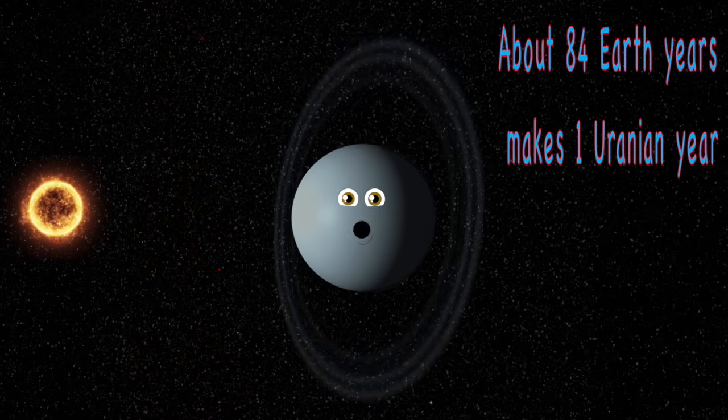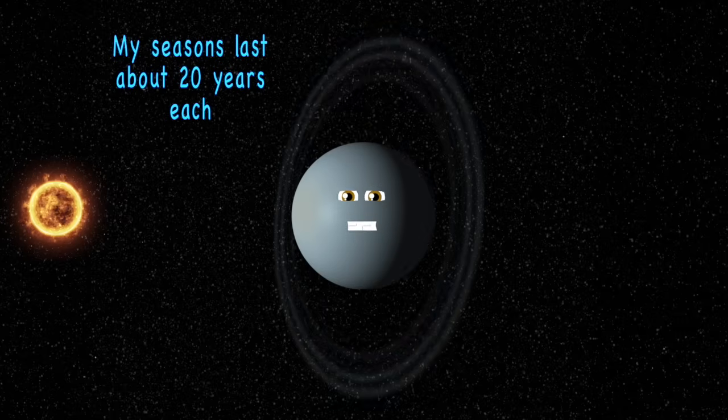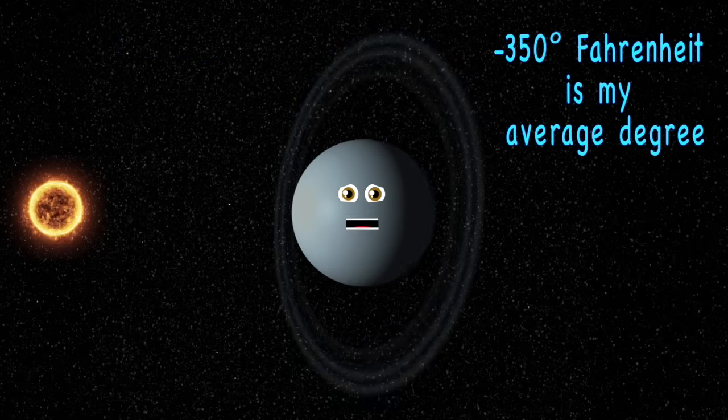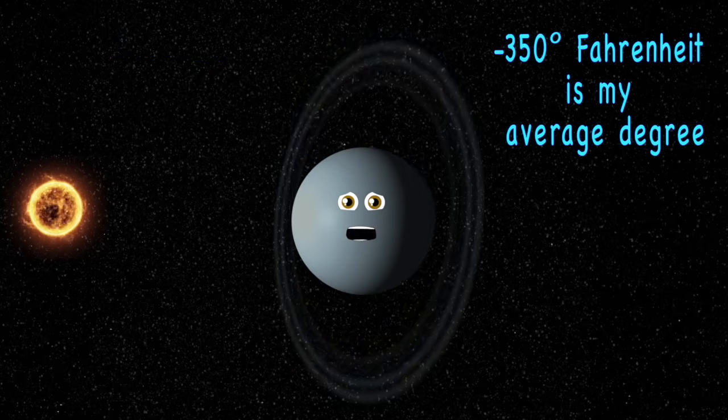About 84 Earth years makes just one Uranian year, and my seasons last about 20 years each. Negative 350 is my average degree, and William Herschel did discover me.